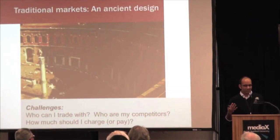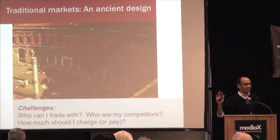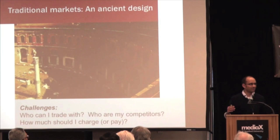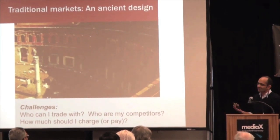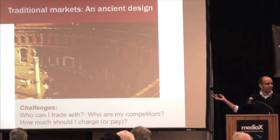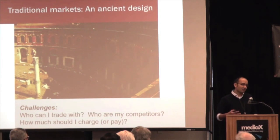Let's start with traditional markets. Markets are obviously an ancient design. The typical picture for a slide like this would be the Agora in Athens, but I wanted something different, so this is Trajan's Market in Rome. The typical features of these markets are, first, that the institution itself changes on a very slow timescale — if you've built the infrastructure, it's hard to change it quickly. The other thing is that the information available to you about what's happening in the market is relatively limited. Questions like who should you trade with, who are your competitors, how much should you charge — those are typically hard to answer because of the limits on available information.